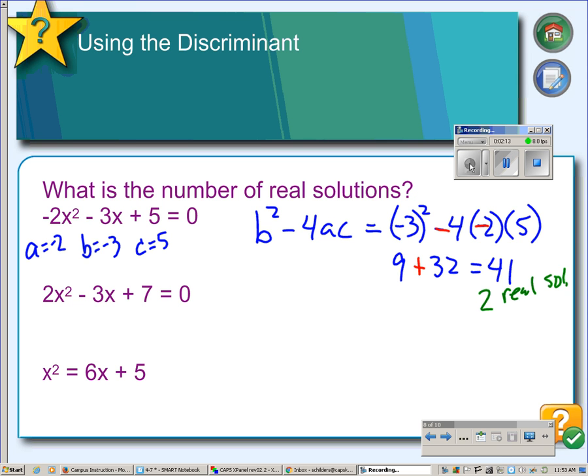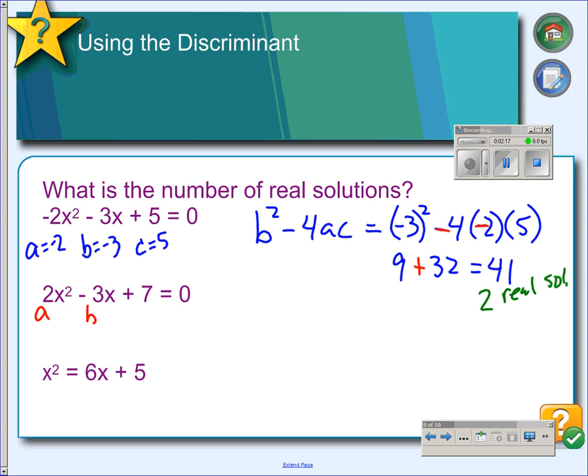In our next example, a is 2, b is negative 3, c is 7. So, plugging into the formula, we have negative 3 squared minus 4 times 2 times 7.